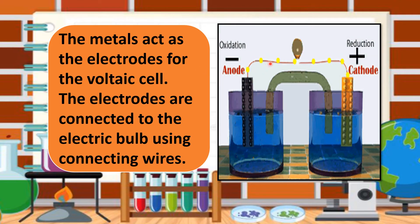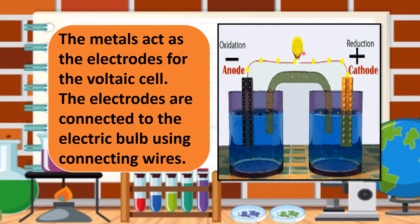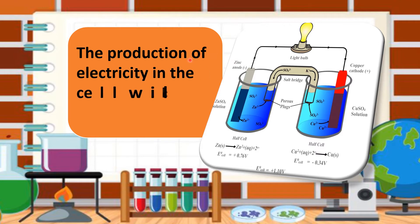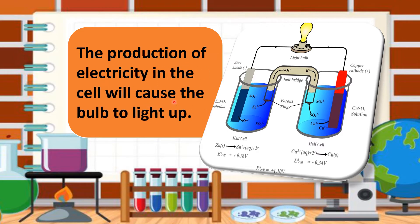These are the connecting wires and these are the electrodes. What will happen? It will produce — it will release electrical energy. That's why the bulb produces light. The production of electricity in the cell will cause the bulb to light up.